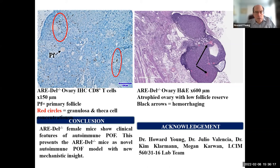In the mouse there's a natural ovary with low follicular reserve and hemorrhaging. Overall, ARE-DEL female mice show clinical features of autoimmune premature ovarian failure, presenting this mouse as a novel model with new mechanistic insight. If we can treat the mice with either the JAK-STAT inhibitor or anti-gamma and see if they get pregnant, it may form the basis for ways to help women who have this syndrome and cannot bear children.